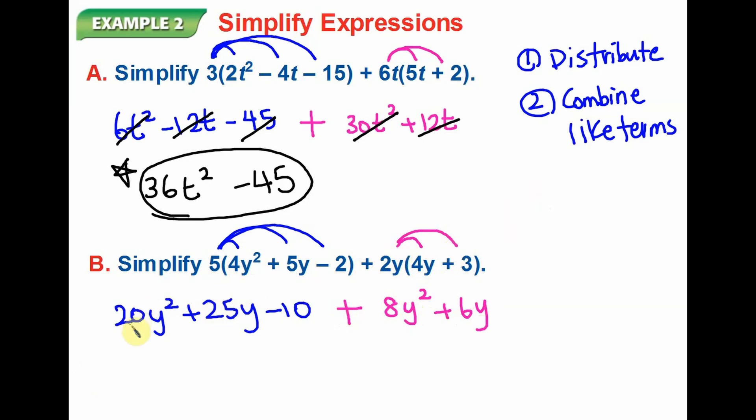Let's combine the like terms. So 20y squared can be combined with 8y squared, which is 28y squared. 25y plus 6y will become 31y. And then I notice negative 10 doesn't have any other term to combine, so this is my simplest form.